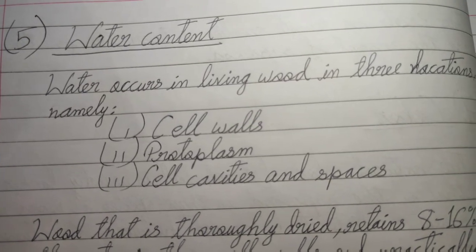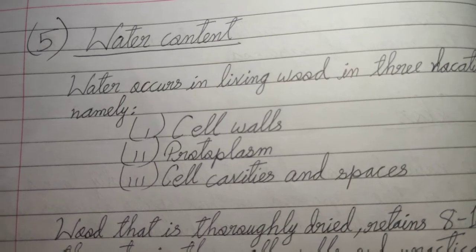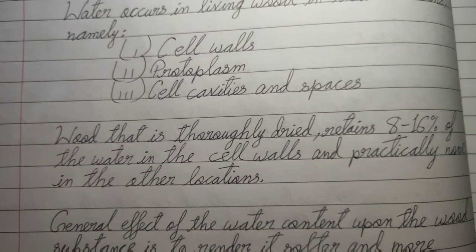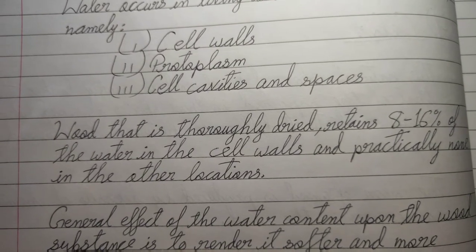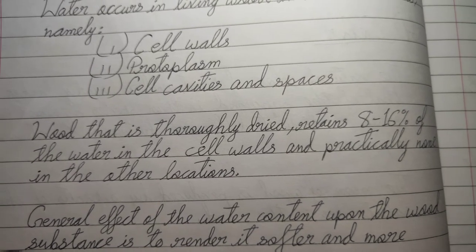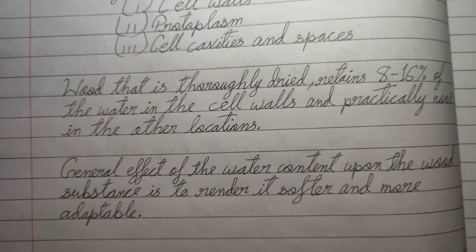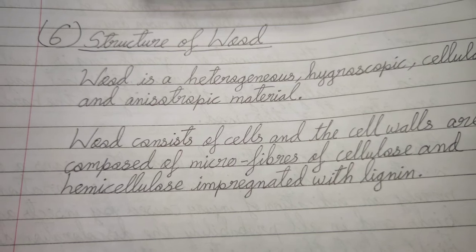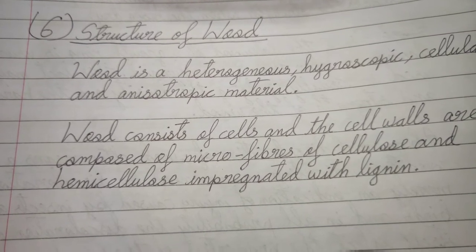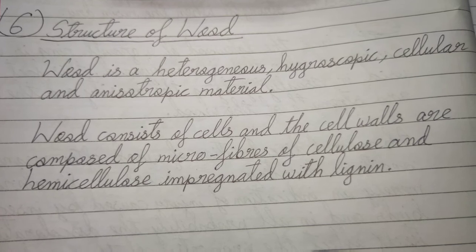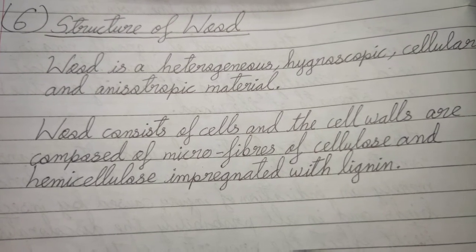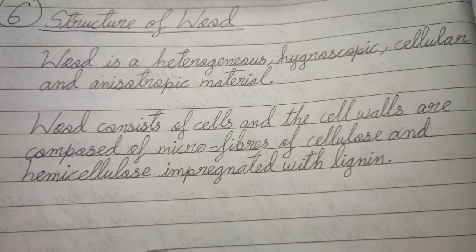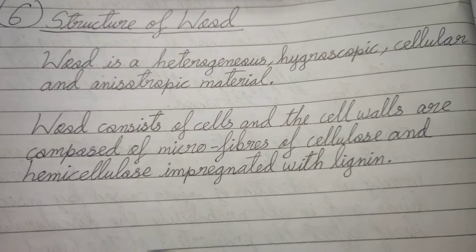Water occurs in living wood in three locations: cell walls, protoplasm, and cell cavities and spaces. Wood that is thoroughly dried retains 8 to 16 percent of the water in the cell walls and practically none in the other locations. The general effect of water content upon the wood substance is to render it softer and more adaptable. Wood is a heterogeneous, hygroscopic, cellular, and anisotropic material. Wood consists of cells, and the cell walls are composed of microfibers of cellulose and hemicellulose impregnated with lignin.